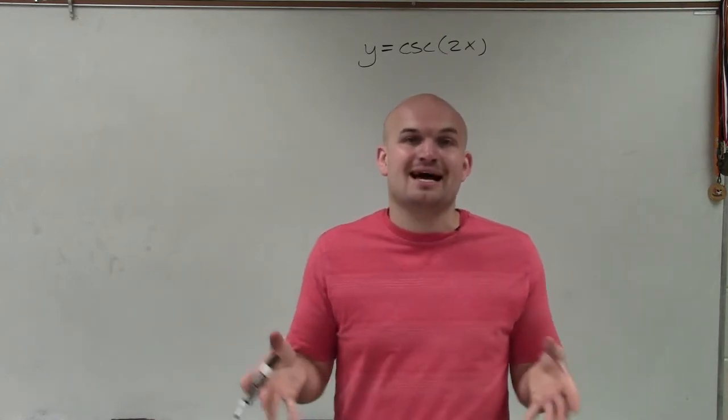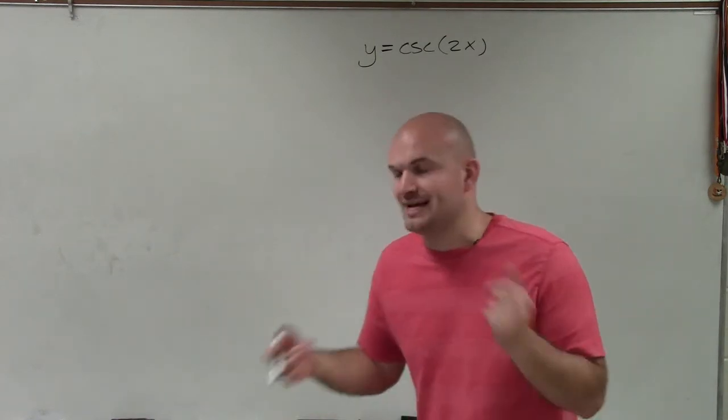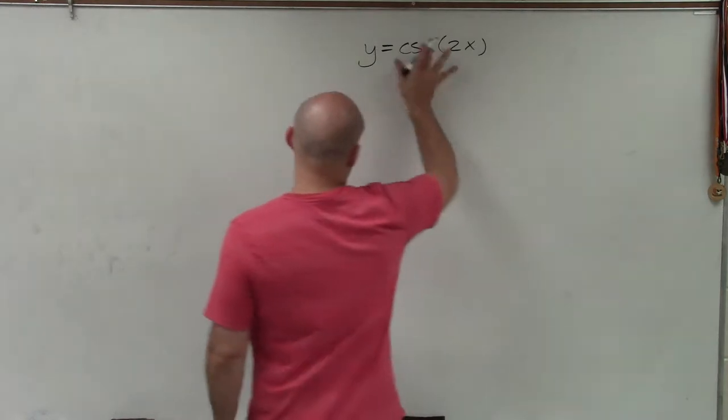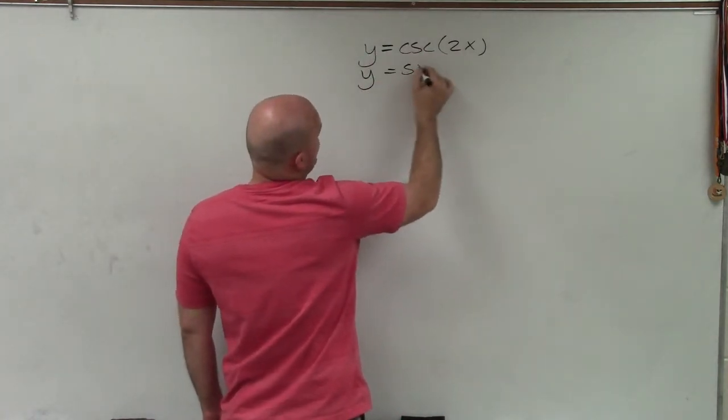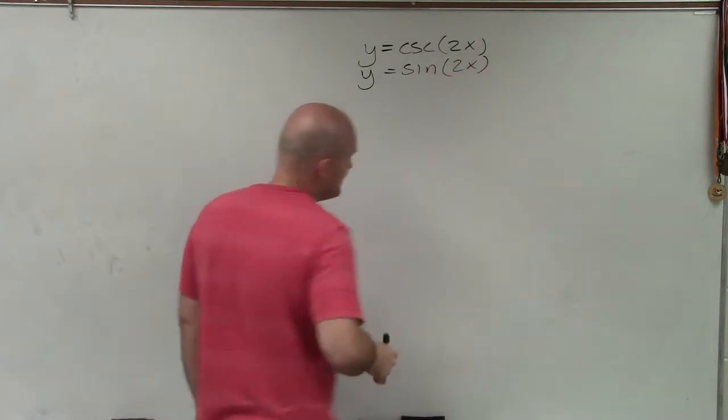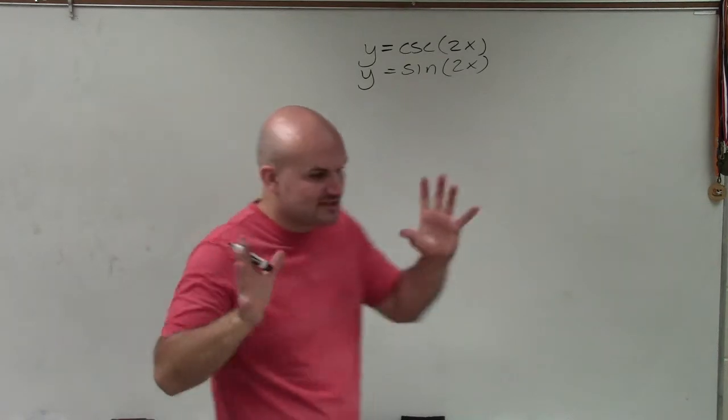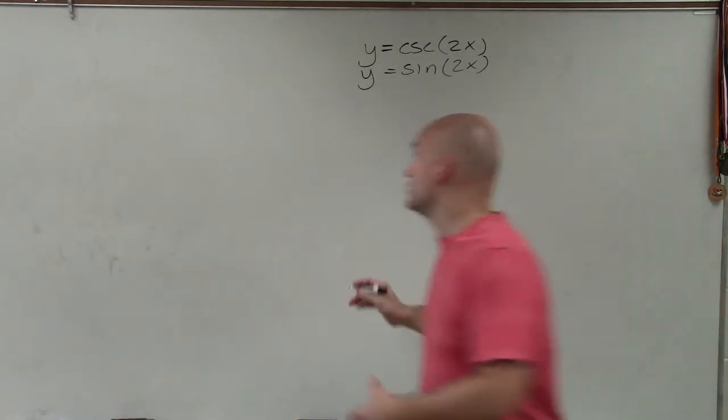And then we can apply that graph to be able to actually find and determine what the graph of cosecant is going to look like. So I'm going to kind of forget we're dealing with cosecant of 2x right now and just say, let's graph y equals sine of 2x. So when we're graphing y equals sine of 2x, remember there's important characteristics that we need to do.